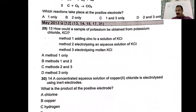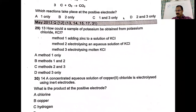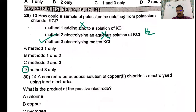How could a sample of potassium be obtained from potassium chloride? Adding zinc won't work — zinc is less reactive than potassium. Electrolyzing an aqueous solution of a reactive metal will produce hydrogen at the cathode, not potassium. Electrolyzing the molten salt is the only method that works. The answer is D.